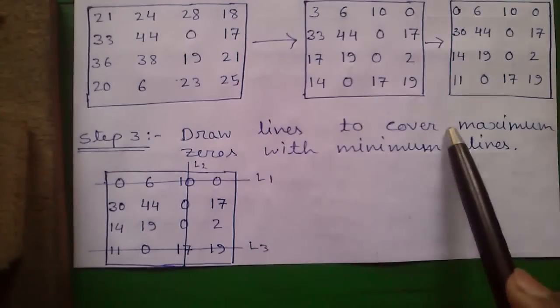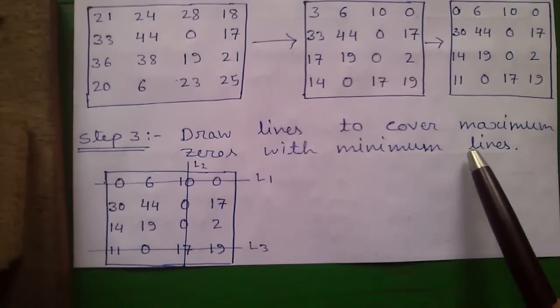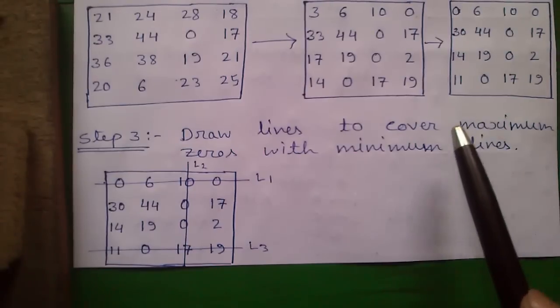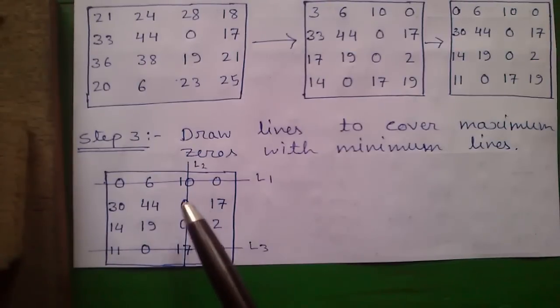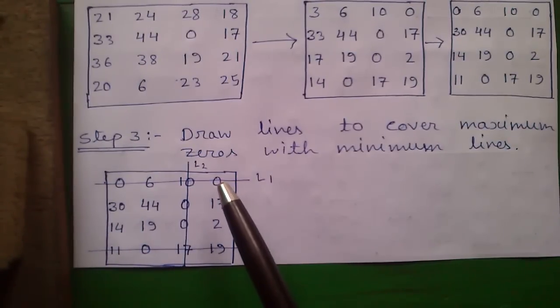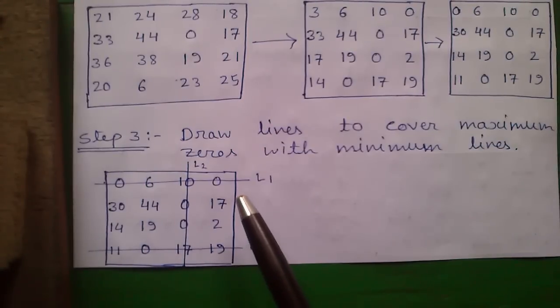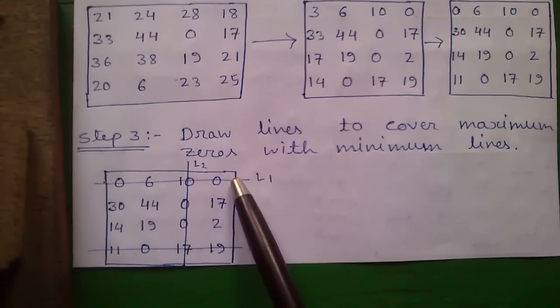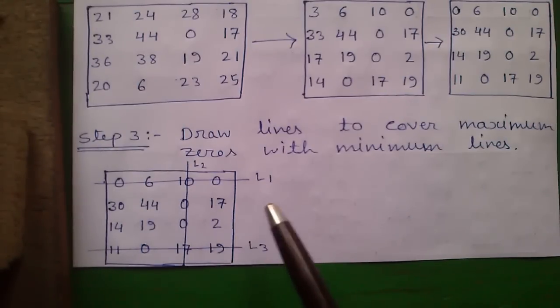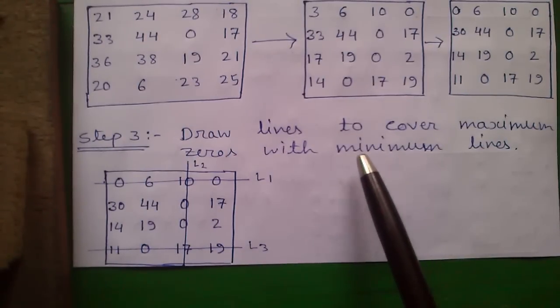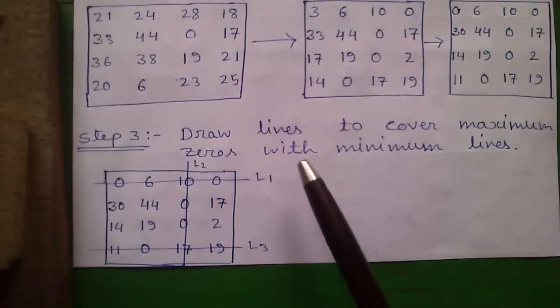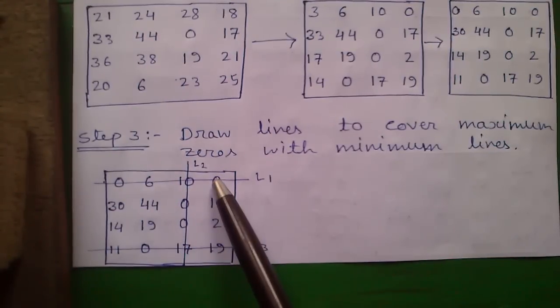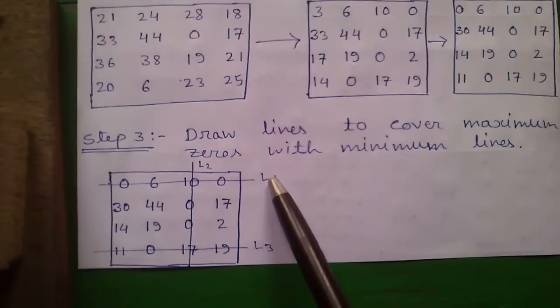Step 3: Draw lines to cover maximum zeros with minimum lines. Our objective is to start with that row or column which has maximum zeros. First in a 4 by 4 matrix we will look for any row or column with exactly 4 zeros. If not, then we will look for 3 zeros in a row or column. Here in row 1 we have got 2 zeros, so we will draw our first line L1 in row 1.